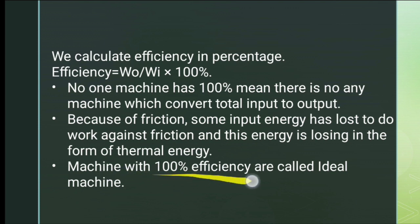A machine with 100% efficiency is called an ideal machine. An ideal machine would convert all input energy into useful output with no losses. In a real machine, energy is not destroyed — it is converted into an undesired form, such as heat due to friction.